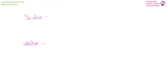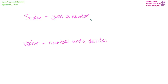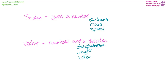A scalar quantity is just a number. A vector quantity is a number and a direction. For example, distance is scalar but displacement is vector, because it's distance in a direction. Mass is scalar but weight is vector. Speed is scalar but velocity, which is speed in a certain direction, is vector. Acceleration, force, and momentum are all vector.